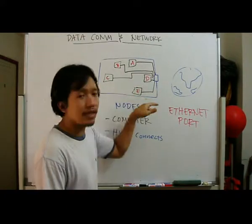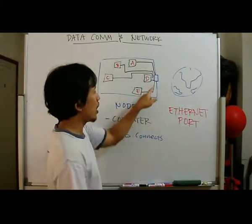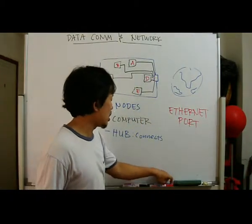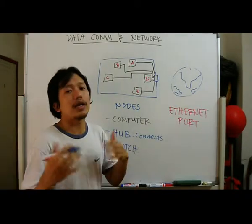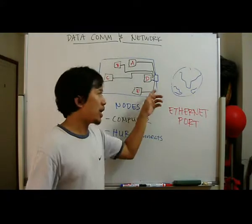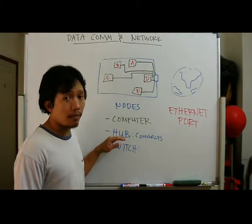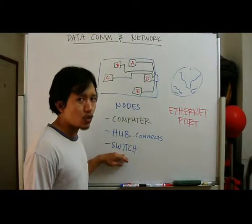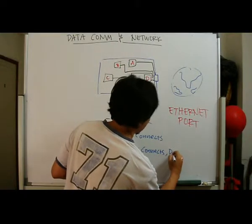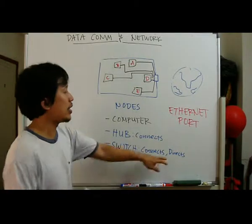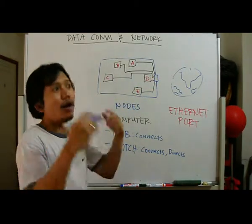We need a way of directing data so that if A wants to send to E, A will just send to E and not everyone else. Instead of using a hub, we can use a different device called a switch. A switch is like an upgraded hub — not just connecting, it can actually direct data. So if data wants to go from A to E, it will go directly from A to E, without going to B, C, or D.